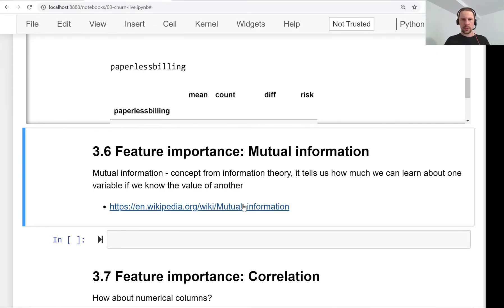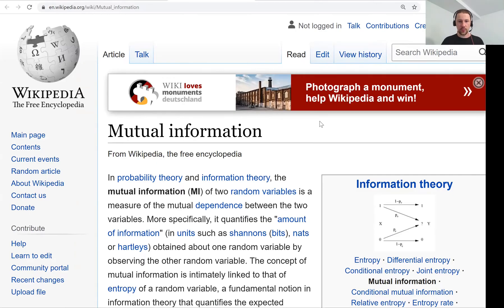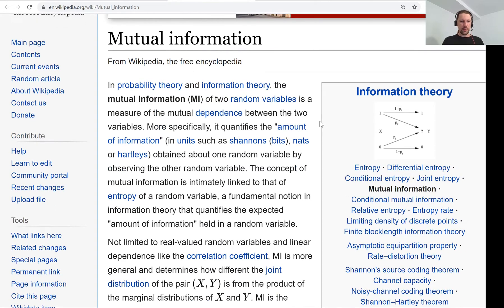There is a link on Wikipedia that says mutual information of two random variables is a measure of mutual dependence between two variables. If we read further, it says it quantifies the amount of information that we get about one variable by observing another variable.